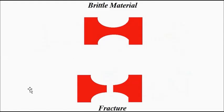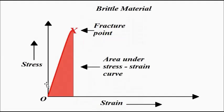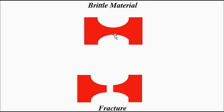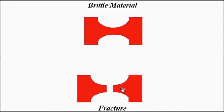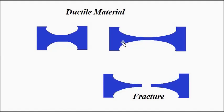For a brittle material, fracture occurs at low values of elongation — low values of strain, meaning almost no elongation at all. In its initial form, at higher values of stress, it undergoes fracture with very little strain. Comparing the two: the ductile material undergoes some stretching and elongation before fracture, while the brittle material undergoes hardly any elongation before it breaks down.